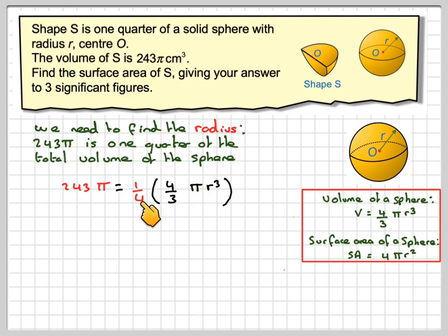Instantly, we notice that these fours will cancel. So we'll cancel them. And then because this is divided by three, we need to multiply it by three on this side. So we get 3 × 243π = πr³.